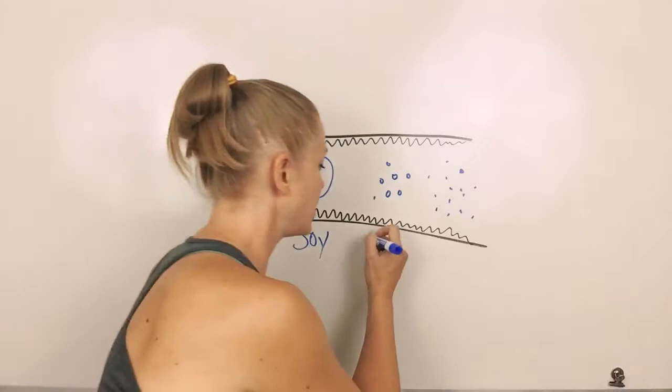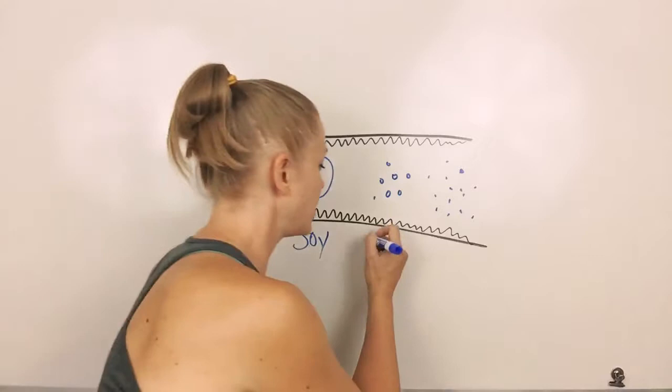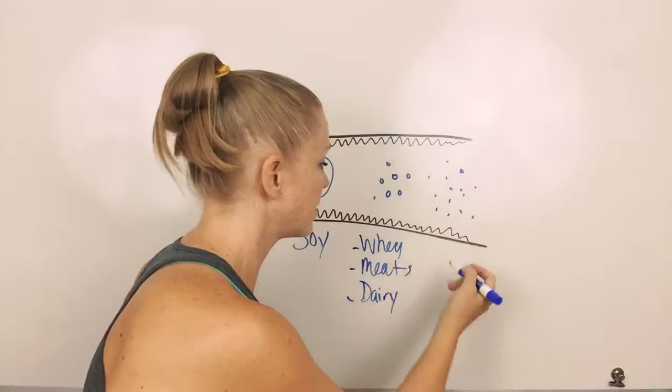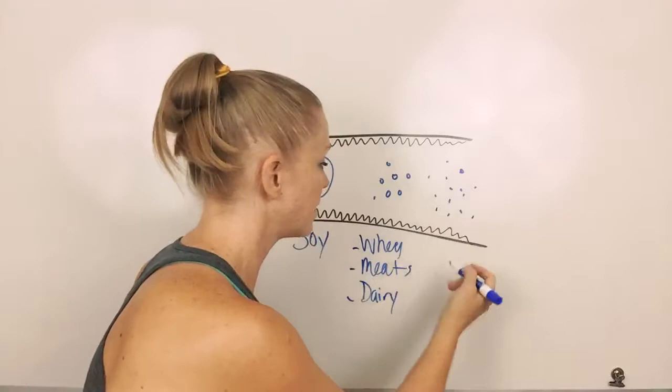The next phase here where we've got these proteins, these are going to be whey proteins. These are going to be any other meats. Dairy is in here as well, all dairy products, things like that. The tiny ones are pea proteins, hemp proteins, rice proteins.